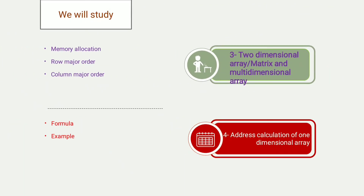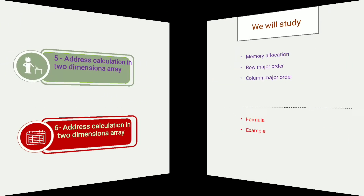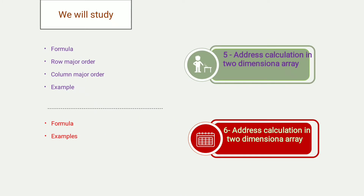In the third video we will study two-dimensional arrays, also called matrices, and multi-dimensional arrays. We will learn memory allocation of two-dimensional arrays in row-major order and column-major order. In the fourth video we will learn address calculation of one-dimensional arrays with formula and one example. In the fifth video we will learn address calculation in two-dimensional arrays with formulas for row-major and column-major order. The sixth video will also cover address calculation in two-dimensional arrays with additional examples.